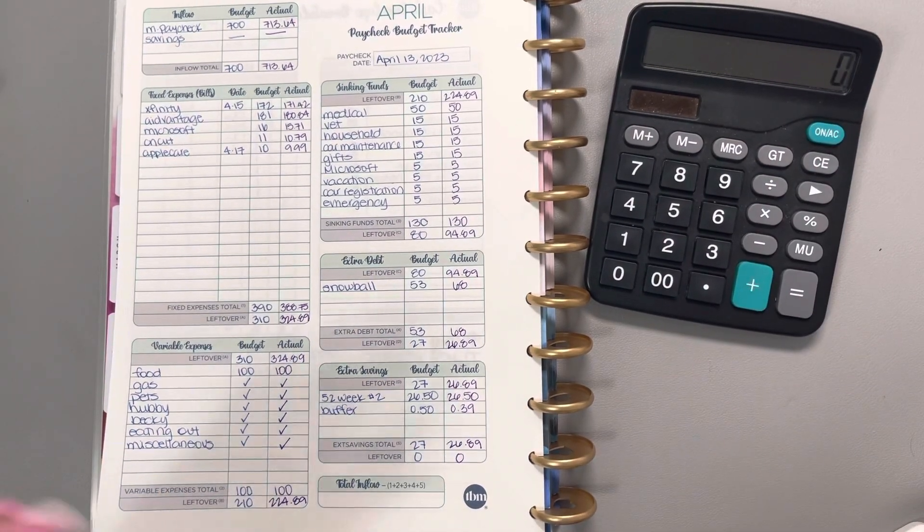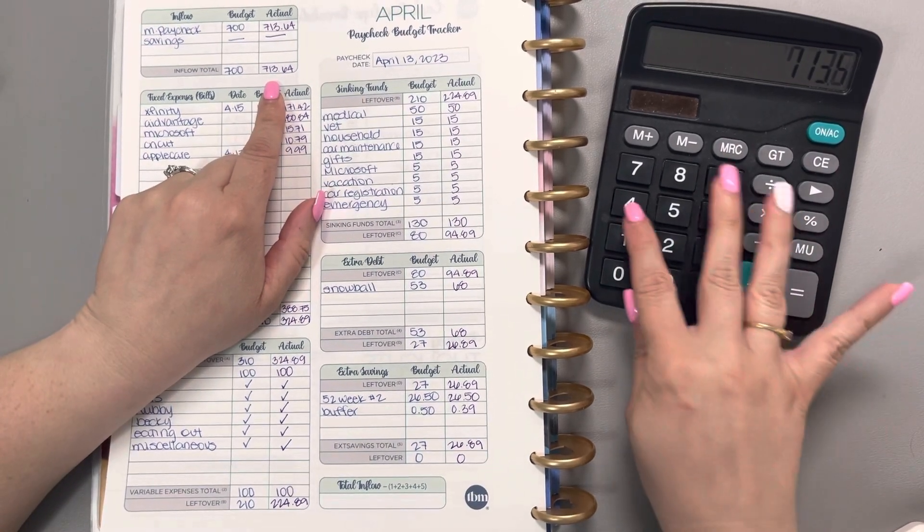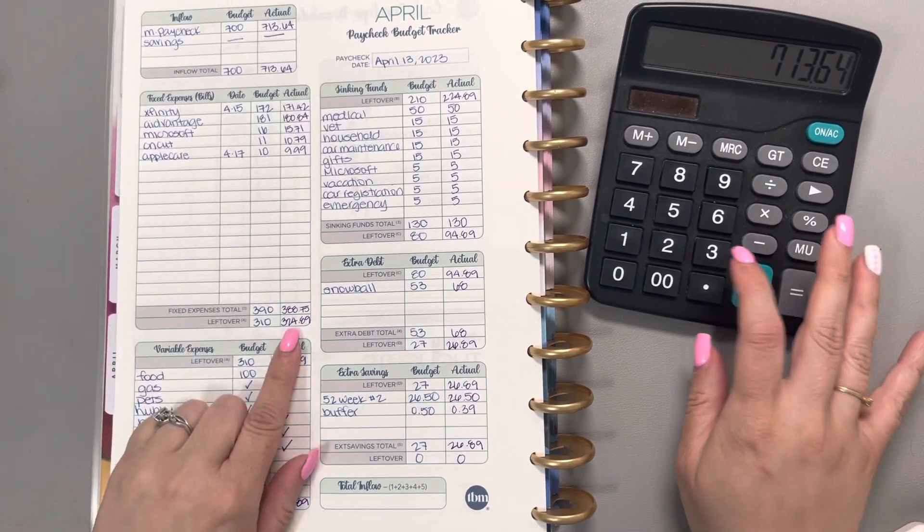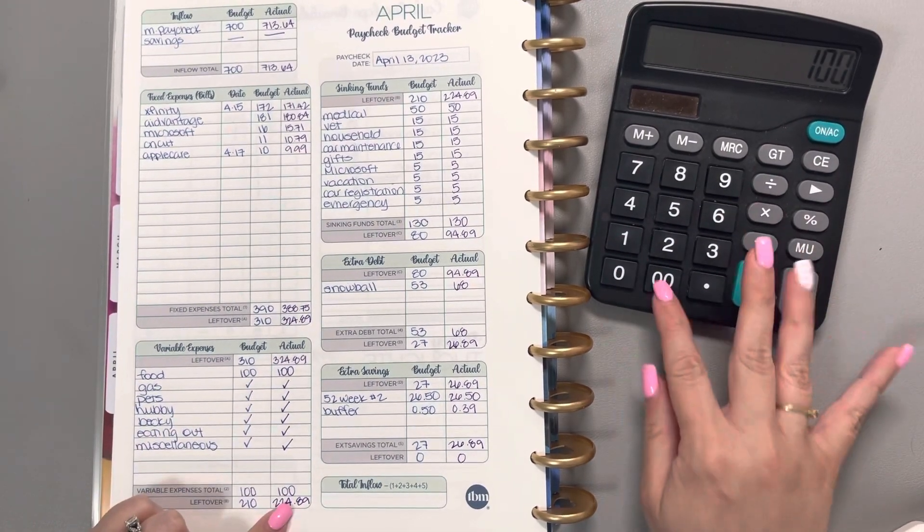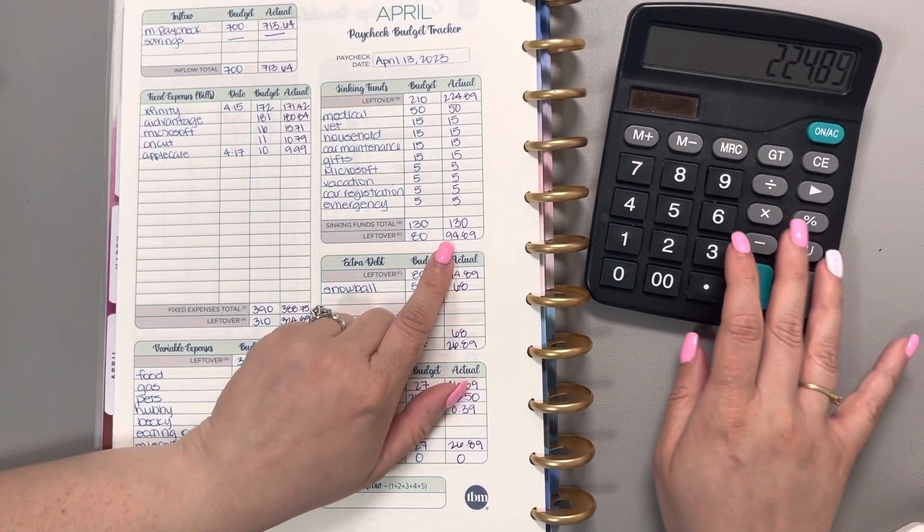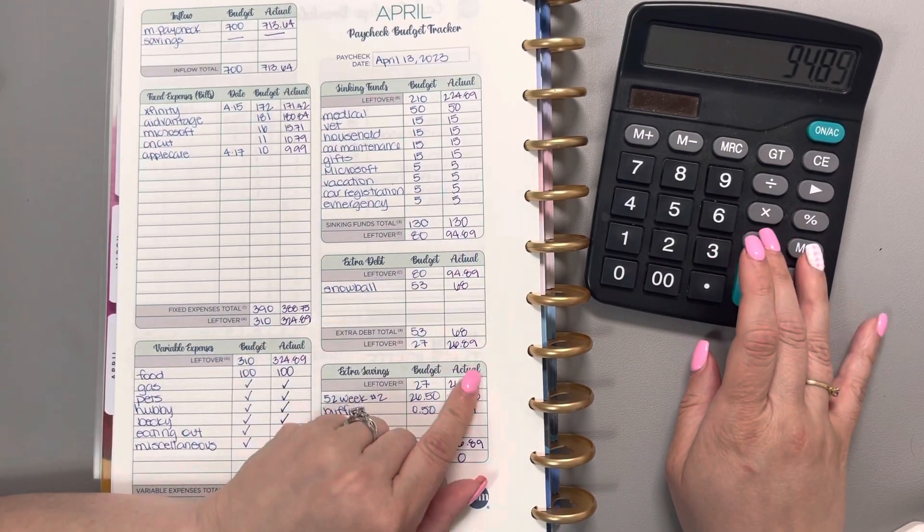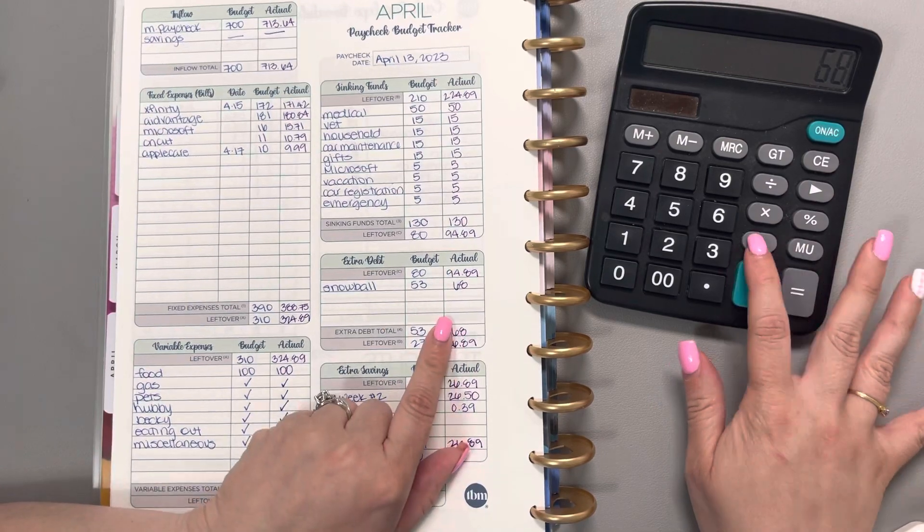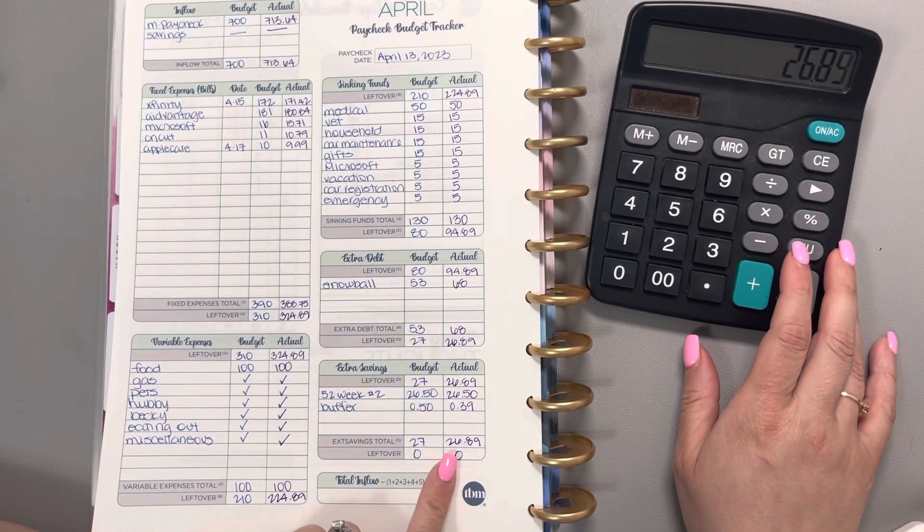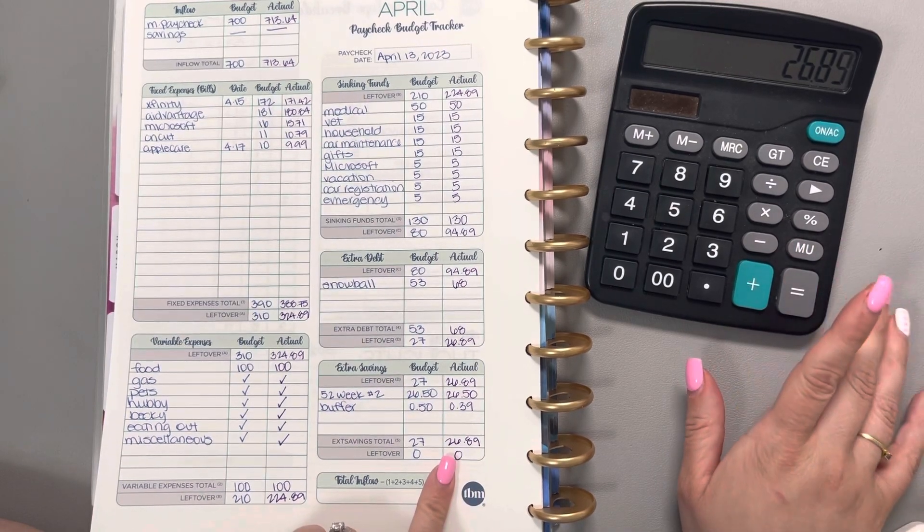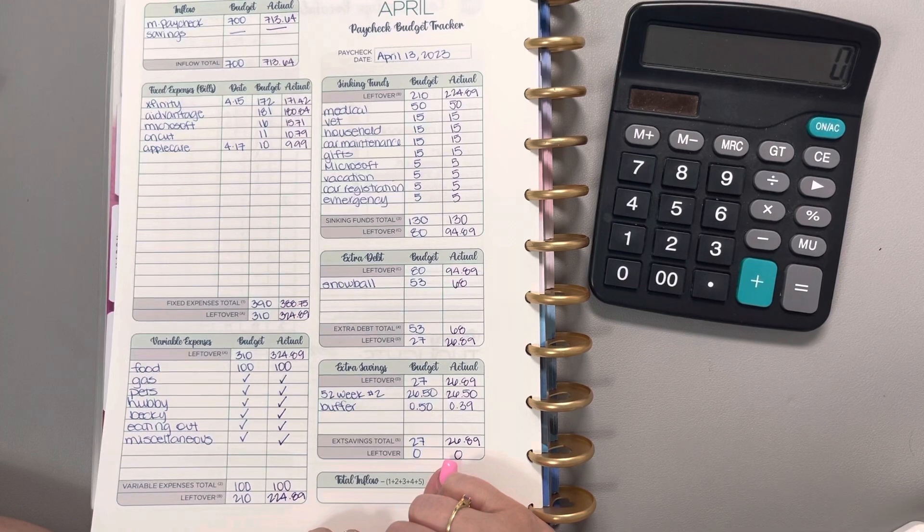As always, my friends, I like to check my math. We have an inflow total of $713.64 minus a bill total of $388.75, $100 going towards food, $130 towards sinking funds, $68 towards our snowball, and $26.89 into savings. That, my friends, gets us to that beautiful zero-based budget.